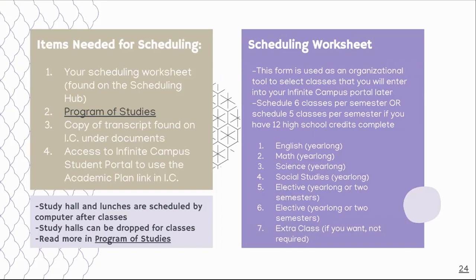What you're going to need for this scheduling process — and a lot of these forms are in the following pages — you'll need your scheduling worksheet, which is found on the scheduling hub, and I'll show you what that looks like. You will need to go to the program of studies. If you click on the link that is in this presentation and also on the scheduling hub, you'll be able to go to the program of studies.